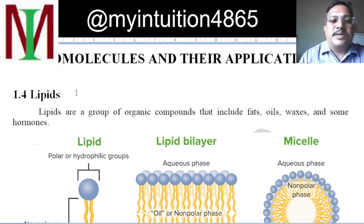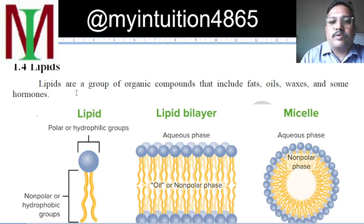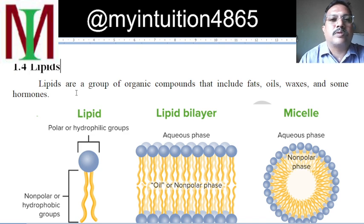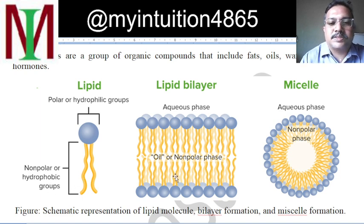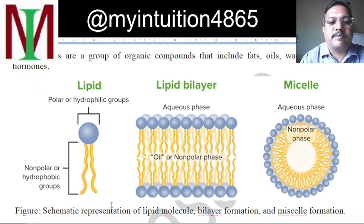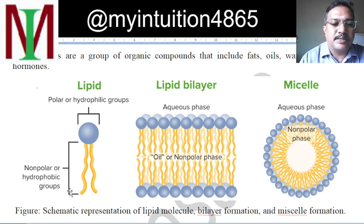Lipids are a group of organic compounds which include fats, oils, waxes, and some hormones. A schematic representation is given here — we can represent a lipid with a head and 2 or 3 tails, sometimes 1, sometimes 2, sometimes 3.